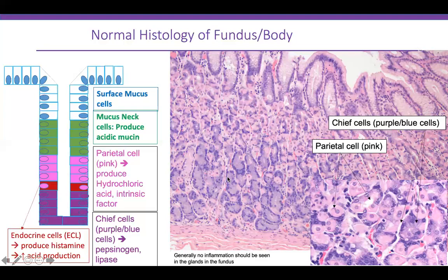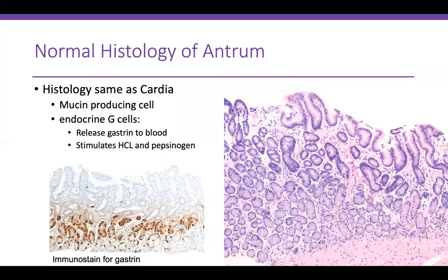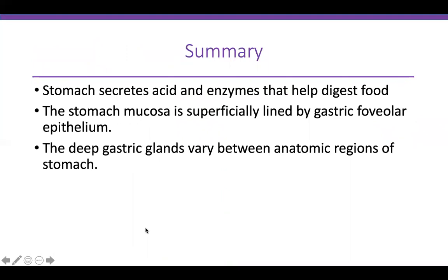Normal histology of the antrum looks similar to the cardia on H&E stain. However, the antrum is distinguished by endocrine G cells, which release gastrin into the blood to stimulate production of hydrochloric acid and pepsinogen. Using immunohistochemistry, we can stain for gastrin and highlight these G cells in brown, as seen in this immunostain image.